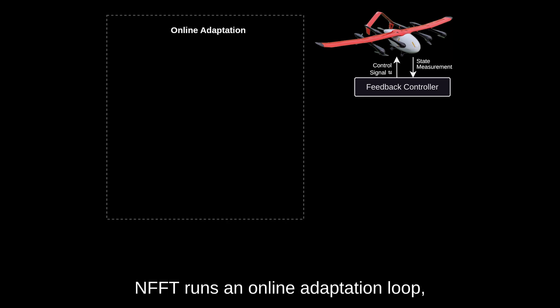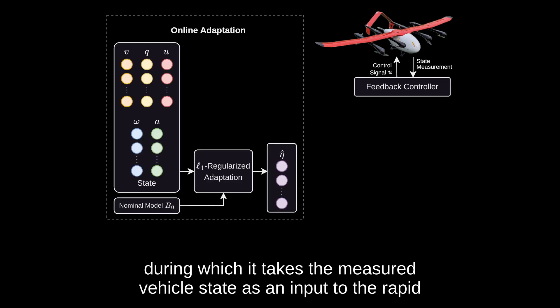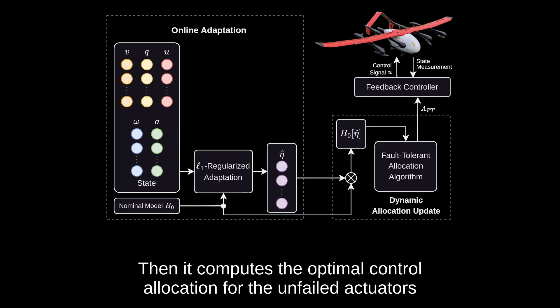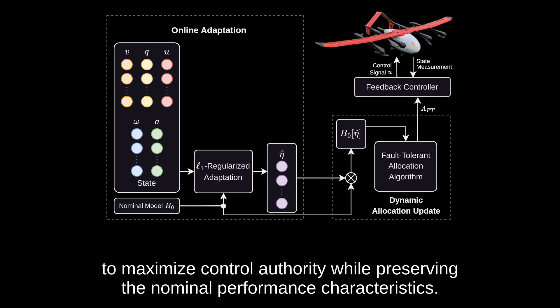Given an aircraft with a baseline feedback controller, NFFT runs an online adaptation loop during which it takes the measured vehicle's state as an input to the rapid L1 regularized recursive estimator to adapt and estimate the effectiveness of each actuator. Then it computes the optimal control allocation for the unfailed actuators to maximize control authority while preserving the nominal performance characteristics.